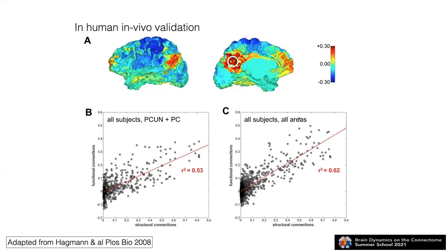The last approach is to compare different modalities that map connectivity in the human brain. We did structural connectivity mapping with the methodology just described, and at the same time acquired resting-state data on the same subjects and calculated functional connectivity. We then proceeded with a simple correlation of connectivity values between non-zero structural connections and their functional counterpart. These two independent methods show quite some degree of correlation, giving additional confidence that both methods are sensitive to something that is real and biologically relevant.